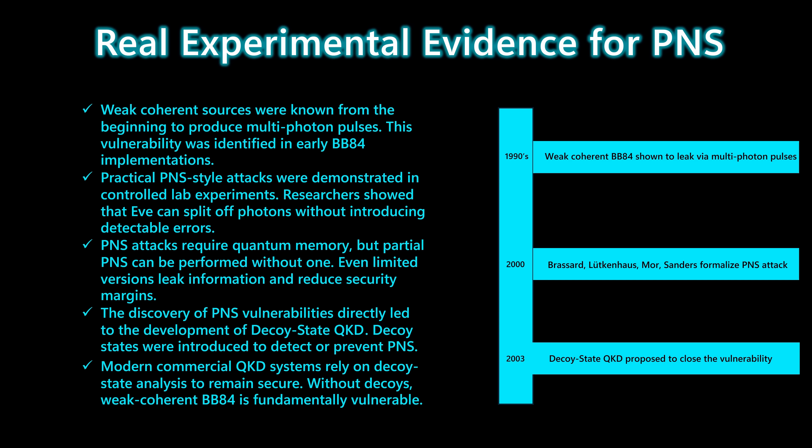This vulnerability directly motivated the development of decoy state quantum key distribution in the early 2000s. Decoy states were introduced specifically to detect or prevent multi-photon leakage. Today, every modern commercial QKD system relies on decoy state analysis to remain secure. Without decoys, weak coherent BB84 is fundamentally vulnerable to PNS.